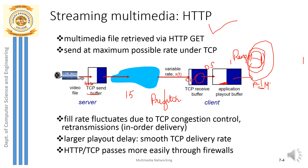The drawback of requesting a range of bytes is that the server may have already sent bytes to the client, but the client then requests a different range. What the server has already sent becomes waste, the reserve in the buffer is also wasted, and bandwidth is wasted carrying unnecessary bytes. This is a major drawback of HTTP streaming.